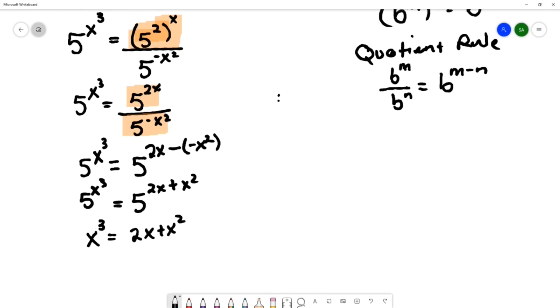So this gives me a polynomial equation. And I'm going to solve this with factoring. I'll move all the terms to the same side. That's going to give the equation x cubed minus x squared minus 2x equals 0.